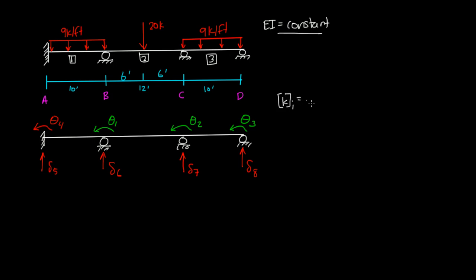We're going to use k sub i is equal to 4EI over L, 2EI over L, 6EI over L squared, negative 6EI over L squared. Our second row is 2EI over L squared, 6EI, actually that's a negative 6EI over L squared. Our third row is 6EI over L squared, 6EI over L squared.